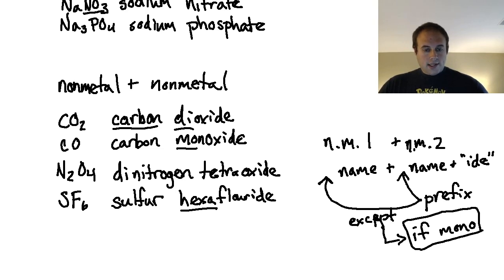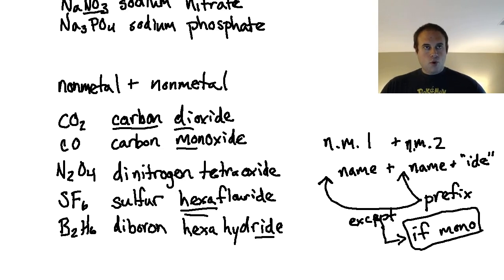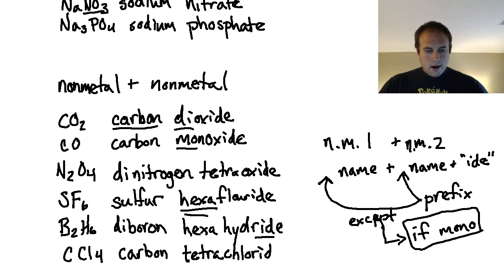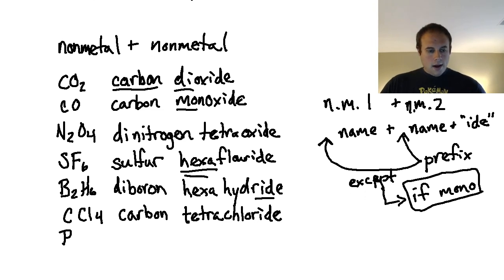When I'm working with this, notice that the hexa goes in front of the F there. What would happen if I had B2H6 for instance? Well, this is boron—I would have diboron because I've got two of these now—and it would be hexahydride. So it's not hydrogen, it would be called a hydride because of that second portion there. What would happen if I had CCl4? Well, again I'm back to one of the examples where there would be a mono, so I would just call it carbon, and then I could call this tetrachloride. I can give you one more common reagent: PBr3. In this case I would have phosphorus, and it would be tribromide.